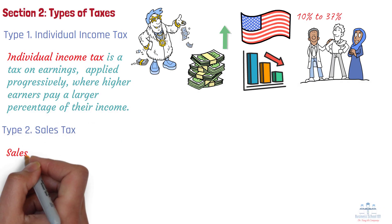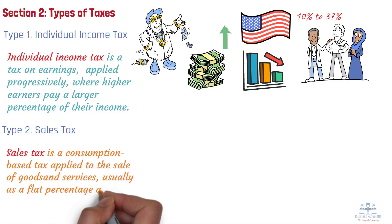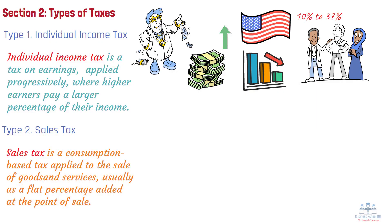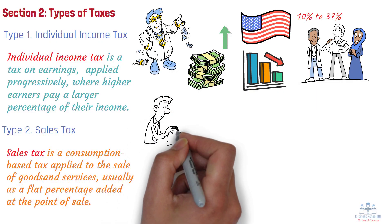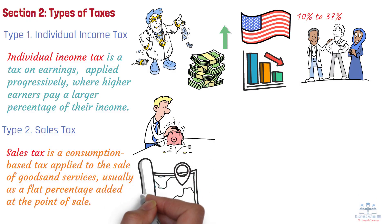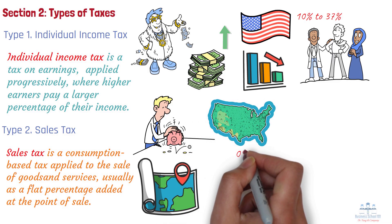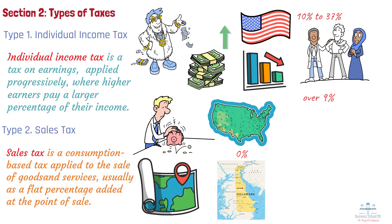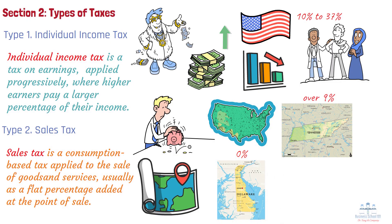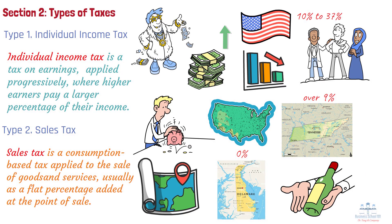Sales tax is a consumption-based tax applied to the sale of goods and services, usually as a flat percentage added at the point of sale. This tax is considered regressive because lower-income individuals spend a larger portion of their income on taxable goods. Sales tax rates vary widely by region, and exemptions may apply to essential items like groceries or medications. In the U.S., sales taxes are levied at the state and local levels, with rates ranging from 0% in states like Delaware to over 9% in states like Tennessee. Selective sales taxes, like excise taxes, apply to specific products such as alcohol, tobacco, and fuel.